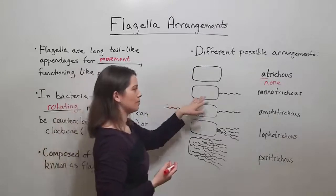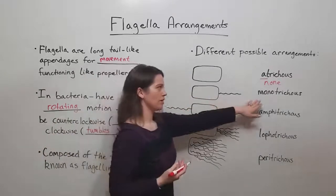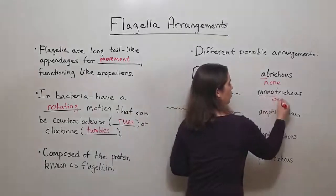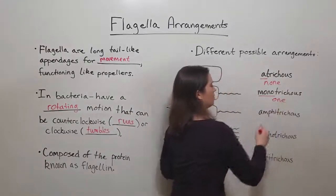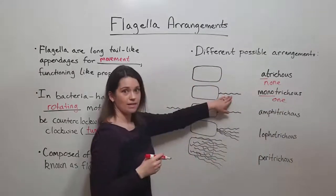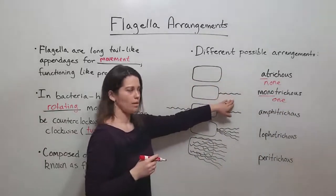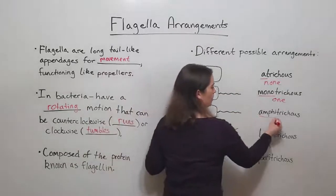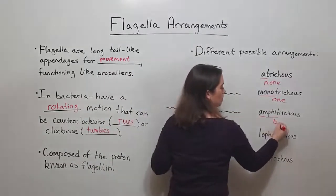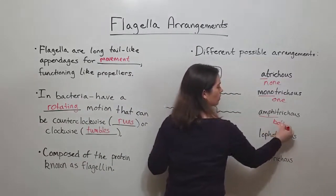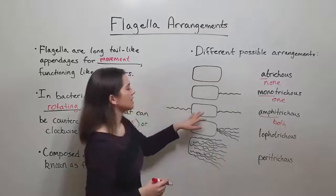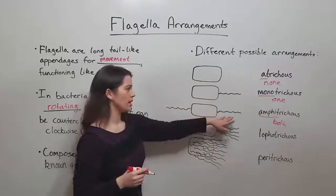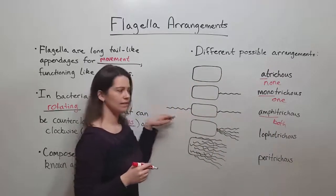The next possible arrangement is monotrichus. Mono means one, and this is when you have a cell with one flagellum. Then there's amphitrichus — amphi means both — so amphitrichus cells are those that have a flagellum on both ends.